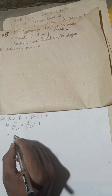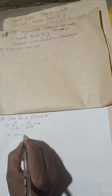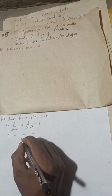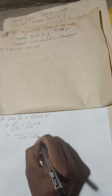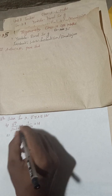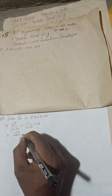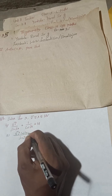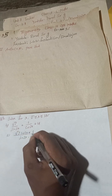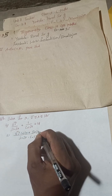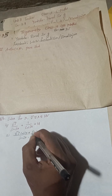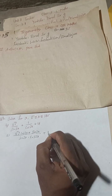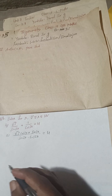Now what we can do here — the LCM is sin 2x times cos 2x. So we get: root 3 cos 2x plus 1 times sin 2x, all over sin 2x cos 2x, equals 4. This gives us root 3 cos 2x plus sin 2x equals 4 sin 2x cos 2x.